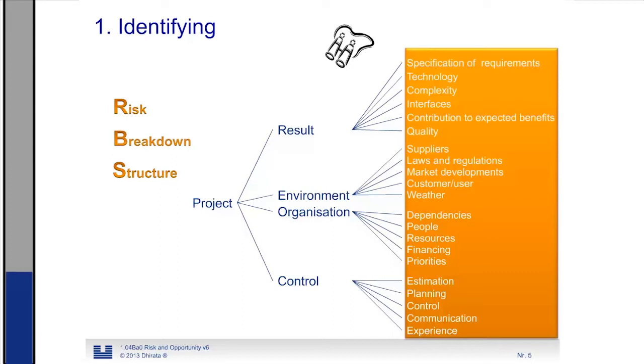Or, of course, the opportunities. And then you ask what can go wrong about the specification of requirements or what can go wrong in the technology. And so you go from top to bottom. And this will result in a huge list with many, many, many risks. Too many risks to manage. So, therefore, we need to prioritize these lists of risks. And this is the next step in which we are going to do that.